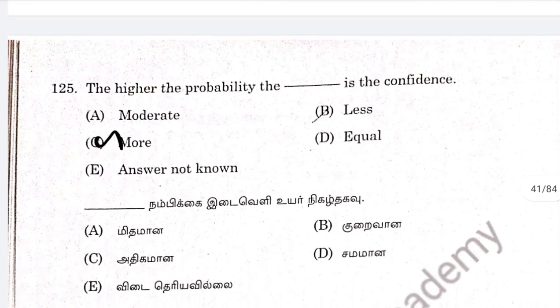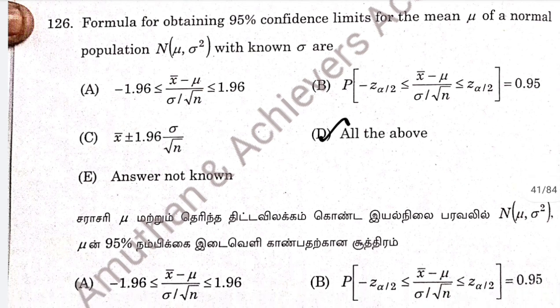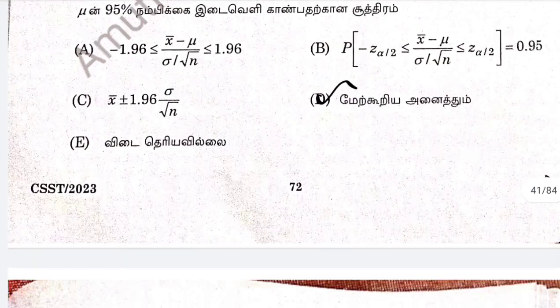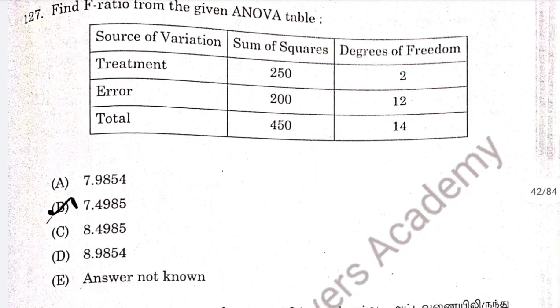Question 125: the higher the probability, that is the confidence interval, the wider it becomes. Option C. Question 126: all options are correct. Question 127: option B, 754985. This is a random number-based problem.